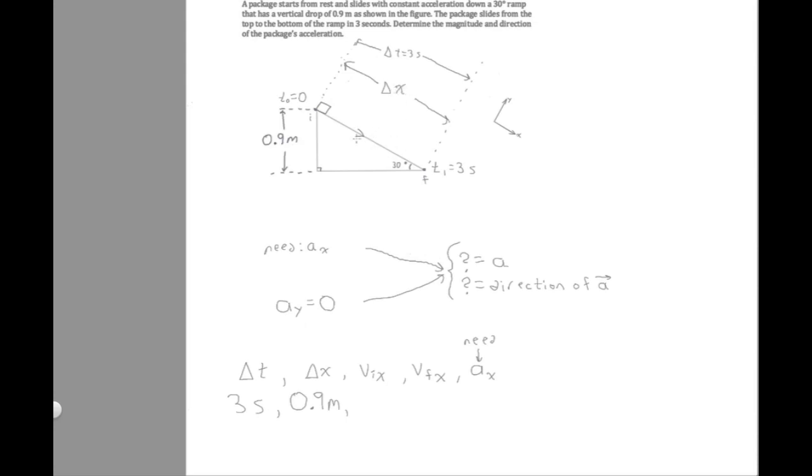How about delta x? The object goes from here to here, so this distance will be the displacement. Should I write down 0.9 meters? They gave us that distance. But I hope you didn't think that was the displacement — that's the trap in this problem. The 0.9 meters is a distance, but not the one we need. The distance we need for delta x is the length of this side of the triangle. Now, finally, we get to use trigonometry.